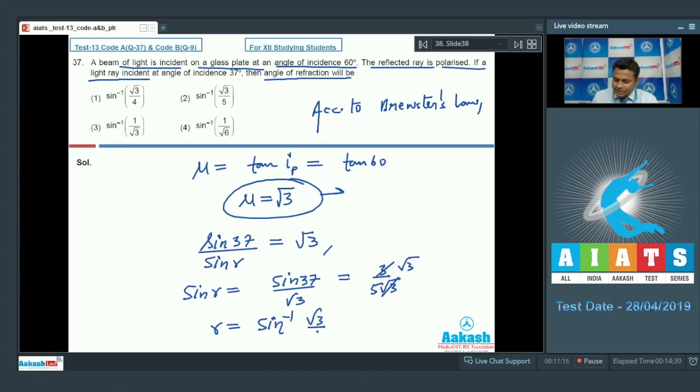Sine inverse root 3 upon 5. So this is the final expression. Let us find out the options. We can say that option number 2 is absolutely correct, so we will go with option number 2 only. Now move on to the next, that is 38.